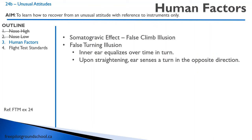Secondly, we have something called a false turning illusion. Let's say we're in a gentle turn — the inner ear equalizes over time in that turn. When we suddenly straighten out, the ear senses a turn in the opposite direction, and so you end up going back into a turn.